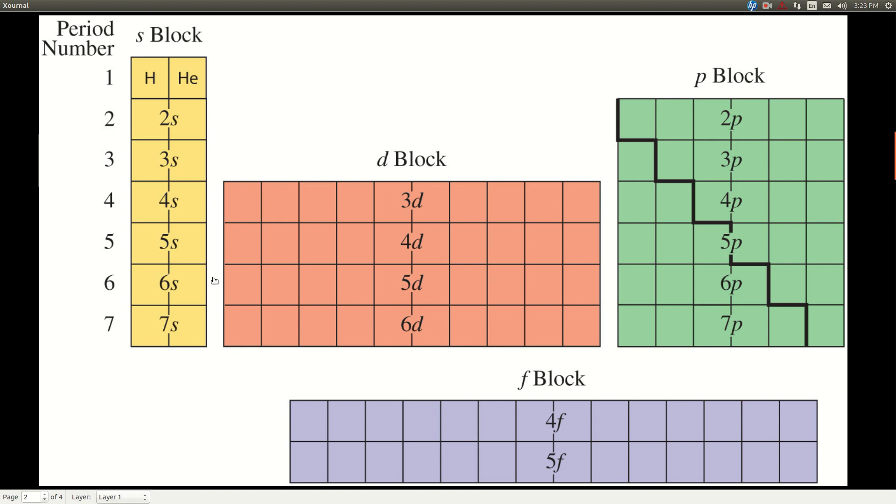Now, remember the F block really fits in right here between 6S, 5D, 7S, and 6D, and it really goes in here, so after the 6S we come down to the 4F, after the 7S we come down to the 5F, and the F block is 2 less than the row number, so if this is the 6th row, 6 minus 2 is 4, we're in the 4F, 7th row, we're in the 5F.